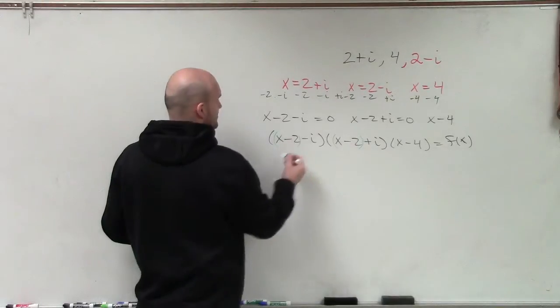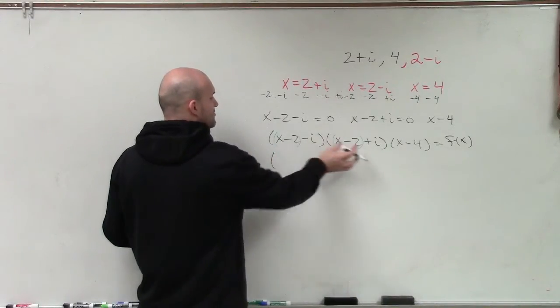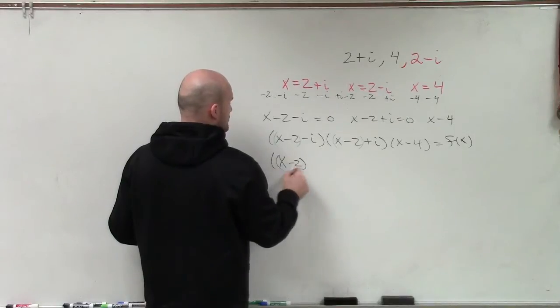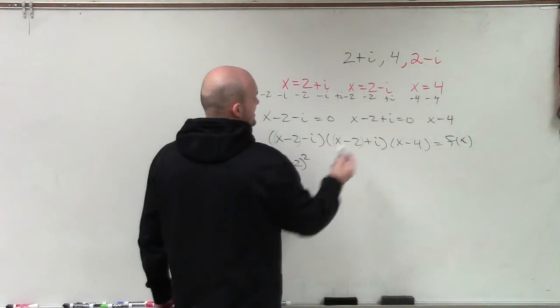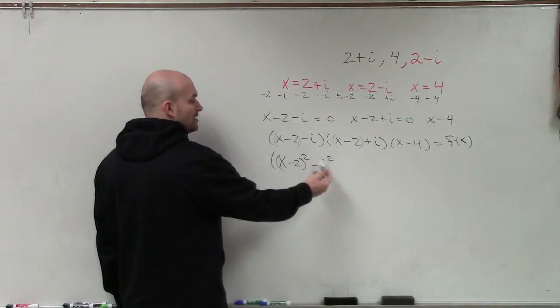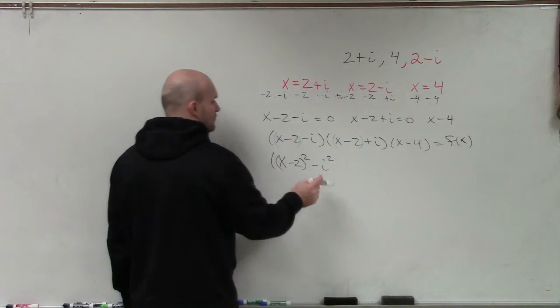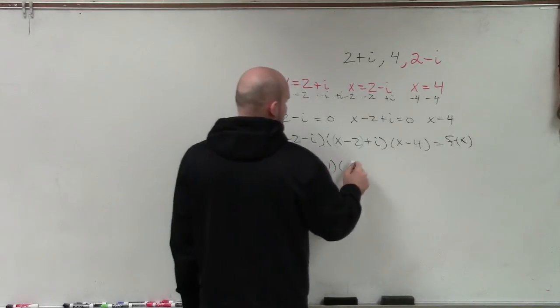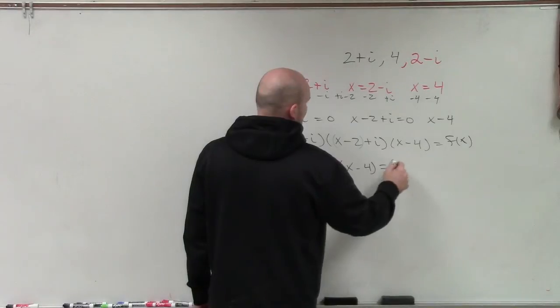So therefore, when I multiply these now, I'm now going to only have to multiply the first two terms and the last two terms. So therefore, I have x minus 2 squared. And then negative i times positive i is going to be a negative i squared. Well, i squared represents negative 1. Negative 1 times 1 is just going to be a positive 1. And then times x minus 4 equals f of x.